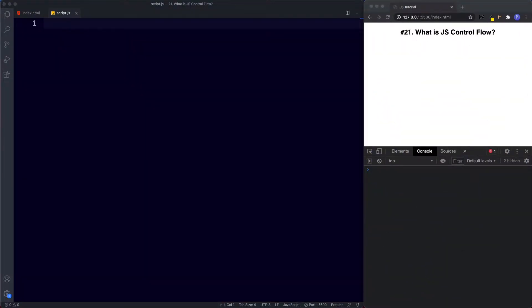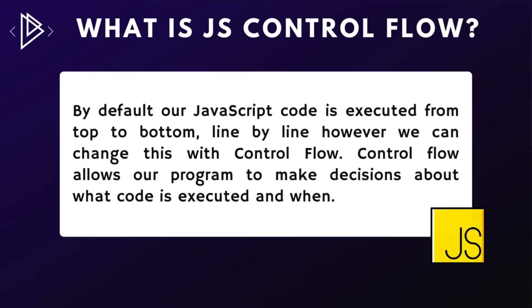In the previous lessons we've learned quite a lot about different primitive data types, built-in global objects such as Math and Date, and different kinds of operators. What we want to be doing over the next few lessons is learn all about something called control flow. By default, our JavaScript code is executed from top to bottom, line by line. However, we can change this with control flow. Control flow allows our program to make decisions about what code is executed and when.